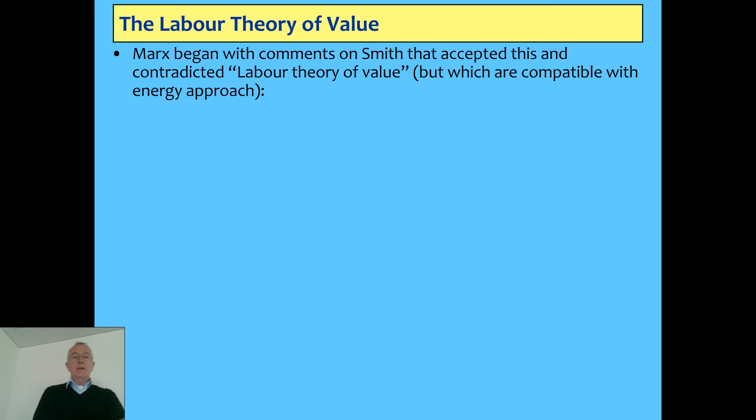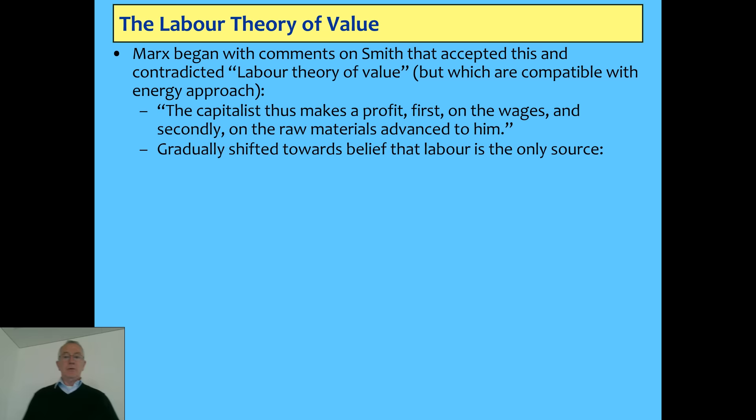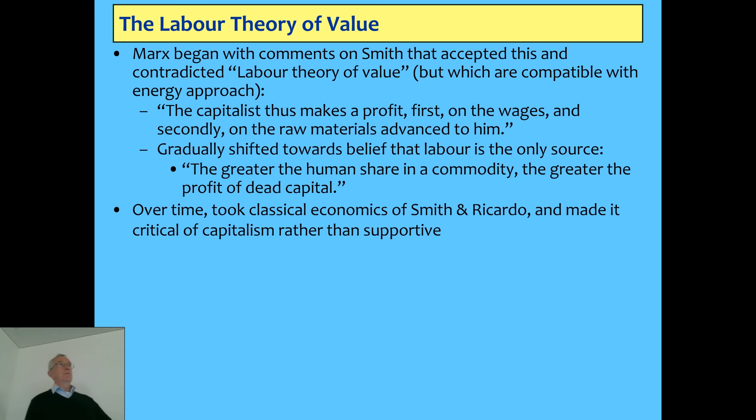When Marx started reading this stuff, his handwritten notes were published as the Economic and Philosophical Manuscripts of 1844. You find him saying things like: the capitalist makes a profit first on the wages and secondly on the raw materials — again, from a thermodynamical point of view that's correct. But he gradually starts shifting towards the belief that labor is the only source of value: the greater the human share in a commodity, the greater the profit of dead capital. Over time, he went from not accepting the labor theory of value to being quite emphatic about it.